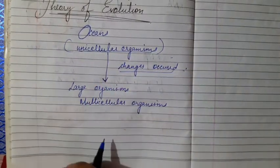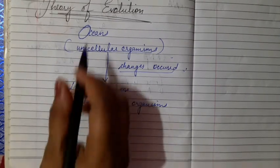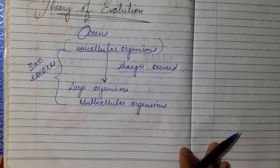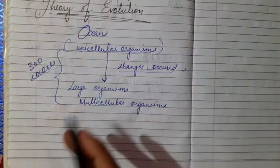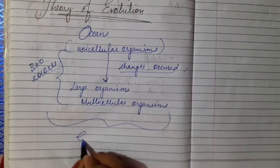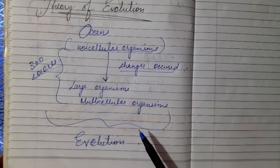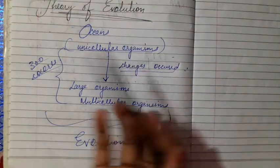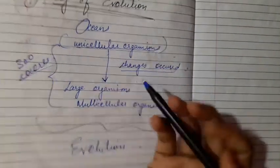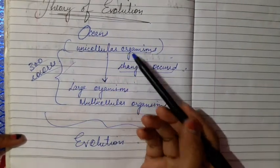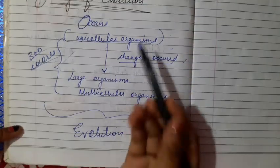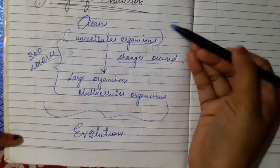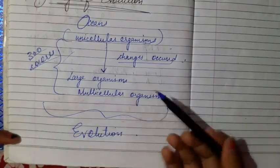These changes occurred over approximately 300 crore years. After this period, we saw unicellular organisms converting into large organisms and multicellular organisms. This overall multidimensional change — from unicellular to multicellular, from small organisms to large organisms and beyond — is known as evolution.